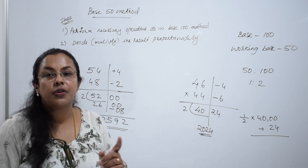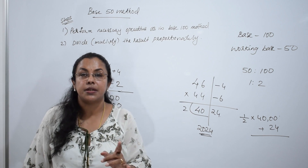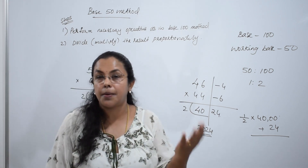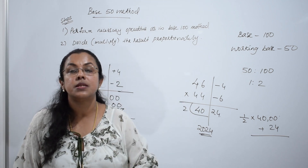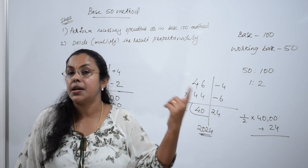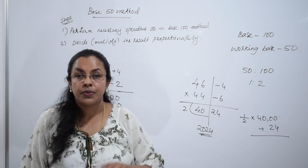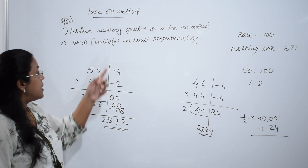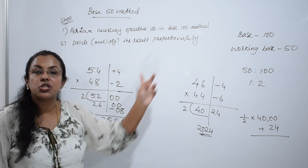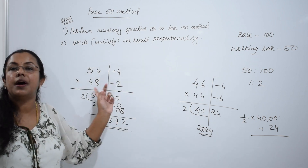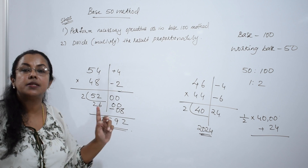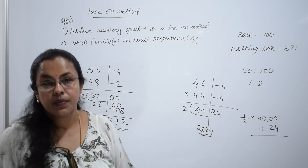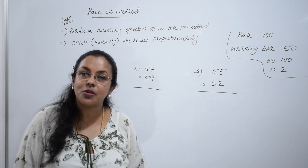I hope all of you remember the base 100 method. In the base 100 method there are 3 cases: both numbers above the base, both numbers below the base, and one number above and one below. Proceed the same method, then divide the result proportionately and subtract. Is it clear? We will practice some more questions.